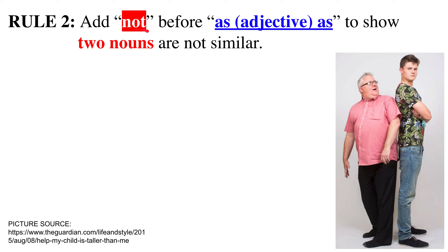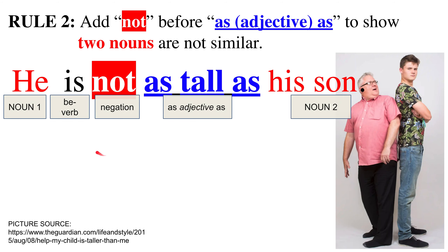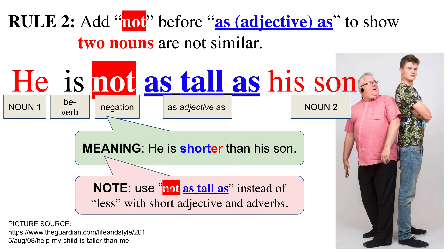Rule two: if we want to add 'not,' we have to add it before 'as adjective as' to show that two nouns are not the same. For example, here we have a father and his son, and we can write: 'He is not as tall as his son.' Noun one is 'he,' the father; the be verb is 'is'; negation 'not' comes before 'as tall as'; and noun two is 'his son.' This means he is shorter than his son — not the same height. Use 'not as tall as' instead of 'less' with short adjectives and adverbs.